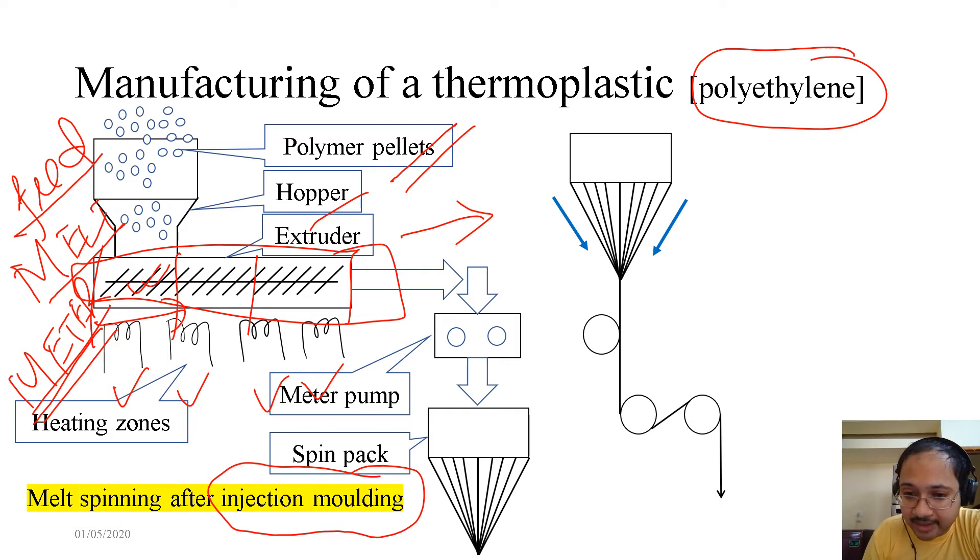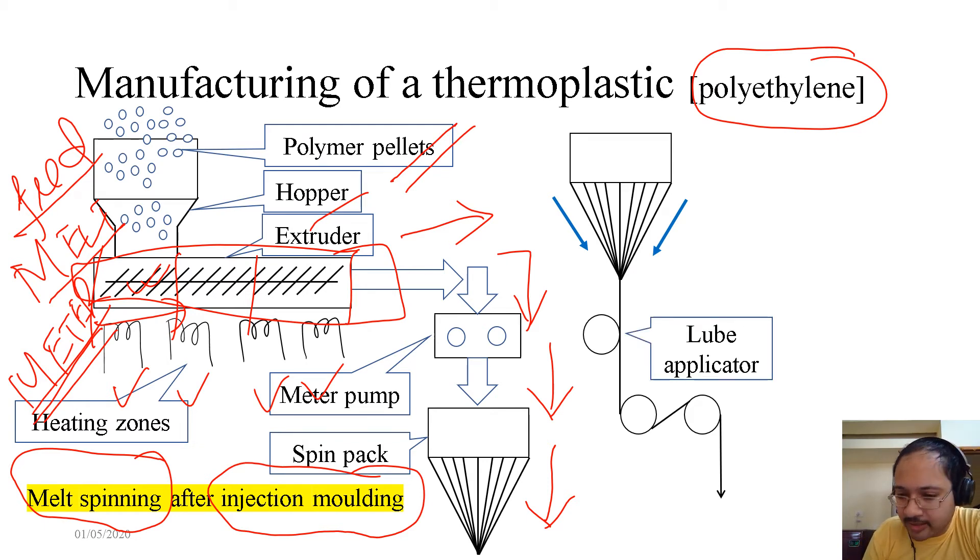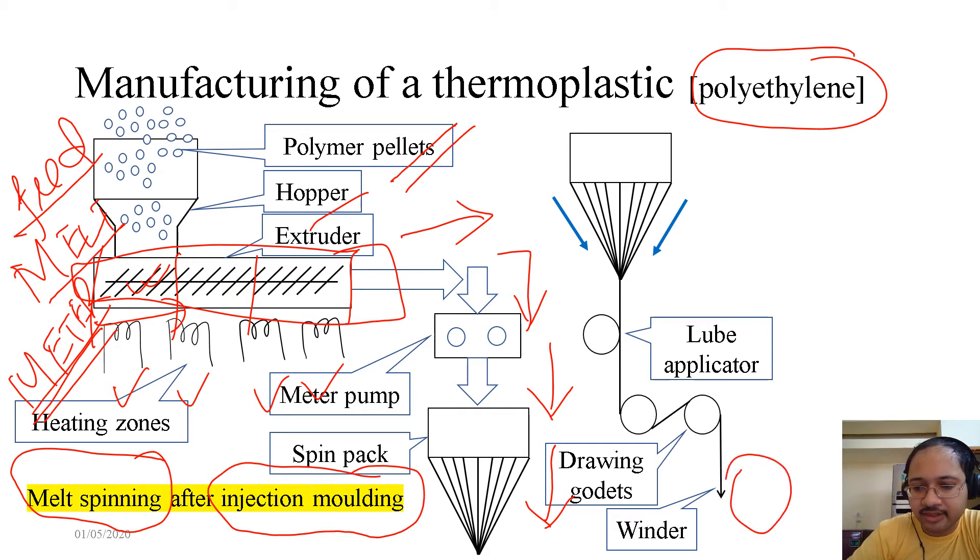Once it comes out, we have the meter pump to adjust the flow rate, how much volume of the material we need to flow per minute. Then we have the spin pack. Melt spinning means something which is melt and then it is spun. This spin pack is going to spin the melt polymer which is coming from here and then it is drawn. You're pulling it. It has already been melted. Then you are spinning it and then drawing it. Then there is a lube applicator and finally drawing godets to apply tension. And then you can have another bobbin here that will keep on winding the fibers.